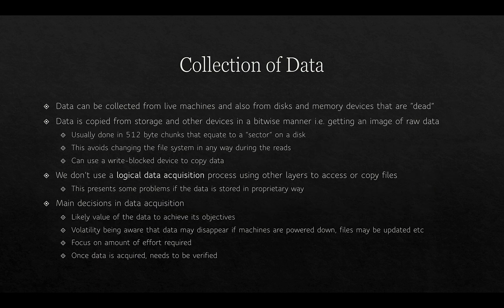Data can be collected from live machines and also from discs and memory devices that are termed dead. Data is copied from storage and other devices in a bitwise manner, getting an image of raw data usually in 512-byte chunks that equate to a sector on the disk. This avoids changing the file system in any way during the reads, and we use a write-block device to copy the data. We don't use a logical data acquisition process because the file system or operating system could alter the data in proprietary ways.